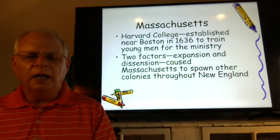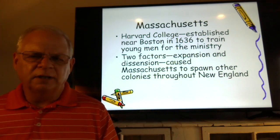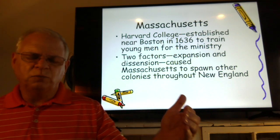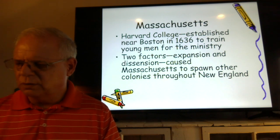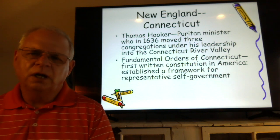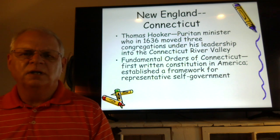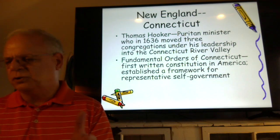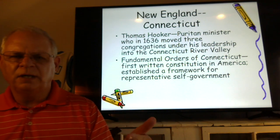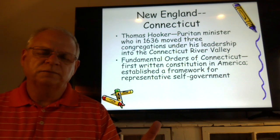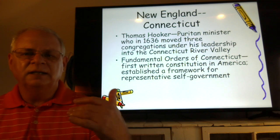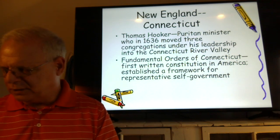Expansion meant people wanting something of their own, moving outside the area governed by Massachusetts. Dissension meant disagreement over religious practices and beliefs — in some cases people left willingly, and in some cases they were kicked out. Looking at Connecticut as an example, Thomas Hooker, a Puritan minister, in 1636 moved three congregations to the Connecticut River Valley. Outside Massachusetts's jurisdiction, they created the Fundamental Orders of Connecticut — the first written constitution. Keep that separate from the Mayflower Compact, which was simply the first document of governing that said they agreed to be governed. The Fundamental Orders of Connecticut spells out how this representative self-government would work.